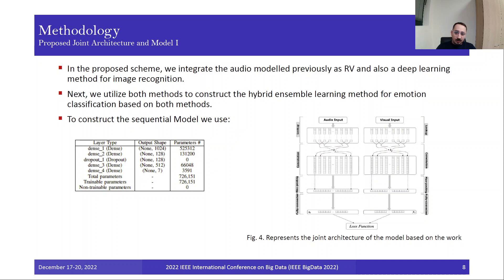Next, we have the proposed zone architecture and the first model that we implement. As we discussed, in the proposed scheme we integrate the audio modeled as a random variable and also deep learning methods for image recognition. We utilize both techniques to have a hybrid ensemble learning method. We have audio input on this side, visual input on the other side, lookup operation, convolution operation, max pooling, and when these are fully connected, we have the loss function. To construct the first model, we use a dense layer of shape 1024, another dense layer of shape 128, dropout, another dense layer, and finally one more dense layer of shape 7.